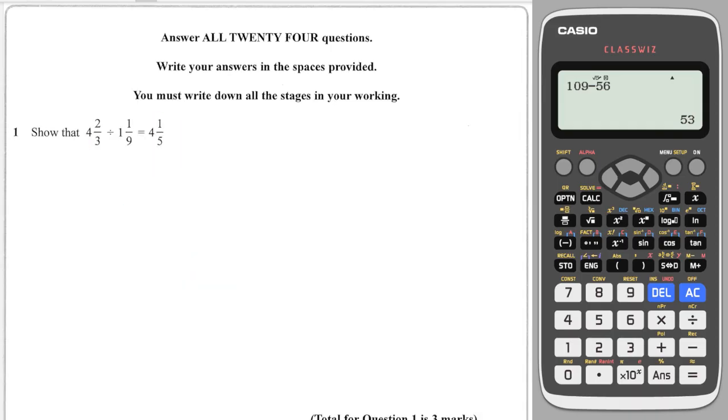And the final question is a division. So we again convert to improper. So we do three times four is twelve, plus two gives me fourteen. And we do nine times one is nine, plus one is ten. And we are dividing. And then the secret to division is keep, flip, change. So we keep this fraction the same. We flip the second fraction over. And then we change to a multiplication.